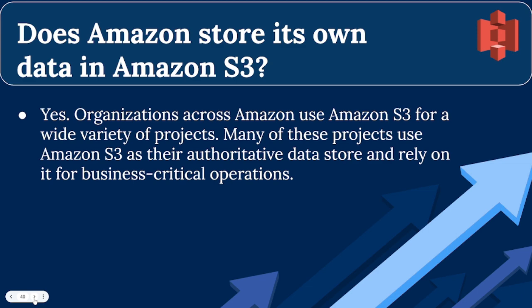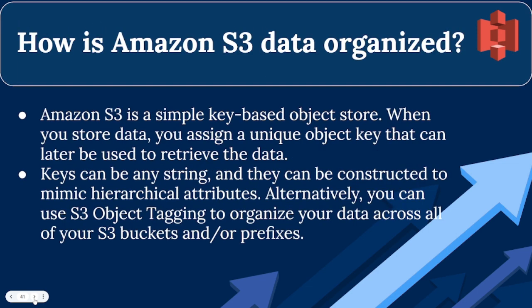Question 8: How is Amazon S3 data organized? Amazon S3 is a simple key-based object store. When you store data, you assign a unique object key that can later be used to retrieve the data. Keys can be any string, and they can be constructed to mimic hierarchical attributes. Alternatively, you can use S3 object tagging to organize your data across all of your S3 buckets and/or prefixes.